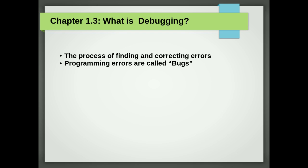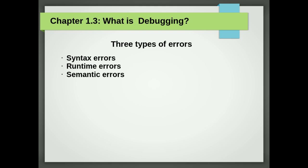What is debugging? Programming is a complex process, and because it is done by human beings, it often leads to errors. For whimsical reasons, programming errors are called bugs, and the process of tracking them down and correcting them is called debugging. Three kinds of errors can occur in a program.